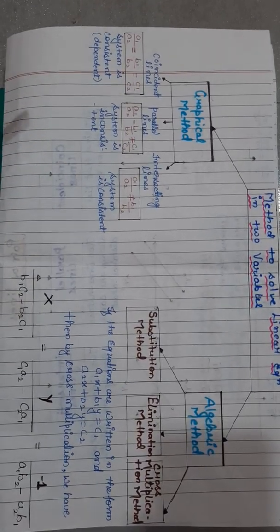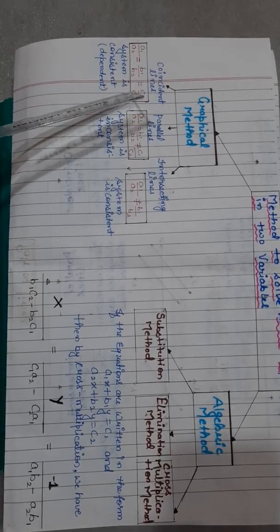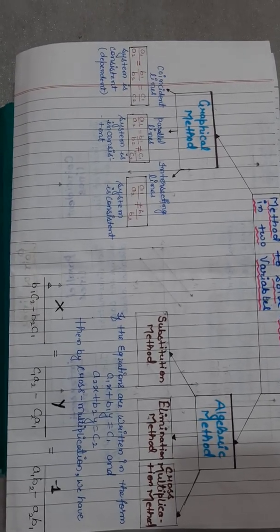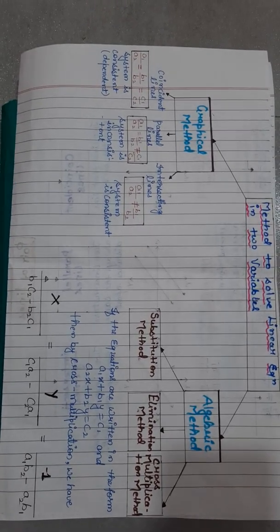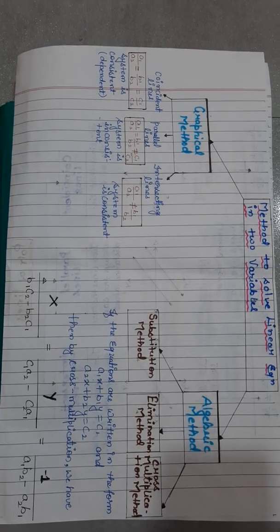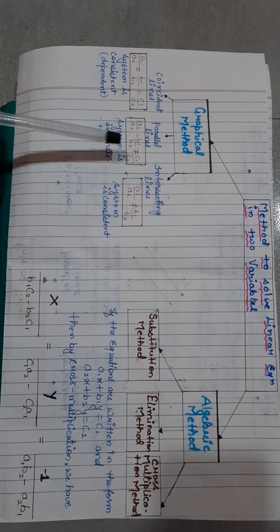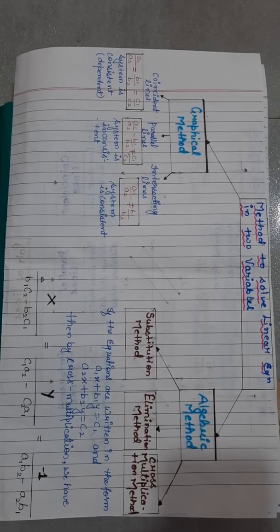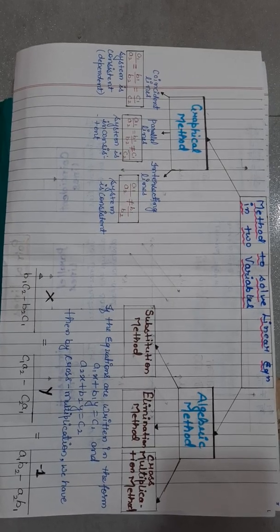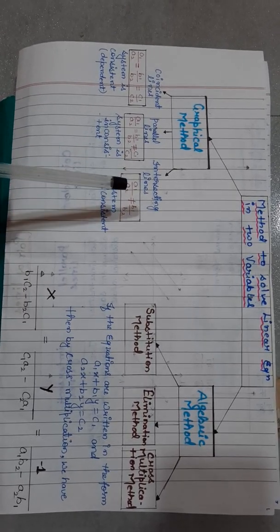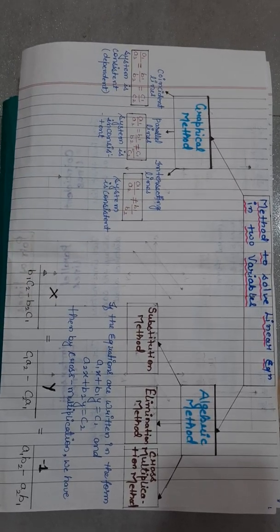In coincident lines, condition is a1/a2 = b1/b2 = c1/c2, so the system is consistent or dependent. In parallel lines, condition is a1/a2 = b1/b2 ≠ c1/c2, so the system is inconsistent. In intersecting lines, condition is a1/a2 ≠ b1/b2, so the system is consistent with a unique solution.